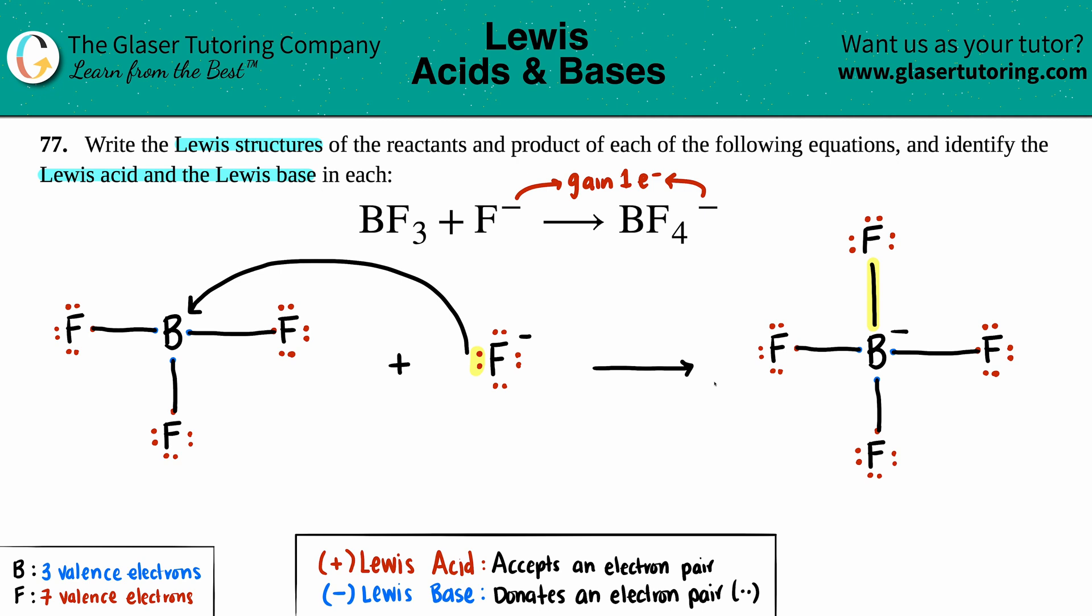But now from here we can find out which one was the Lewis base and which one was the Lewis acid. Keep in mind that the Lewis base and the Lewis acid are only the reactants. We just use the product just to see what happened, but the one that always kickstarts this idea—it's these lone electrons, the one that donates—that's always the base.